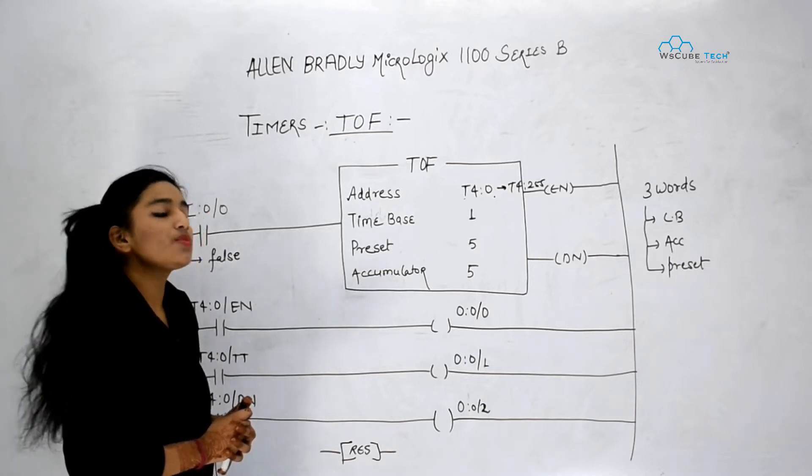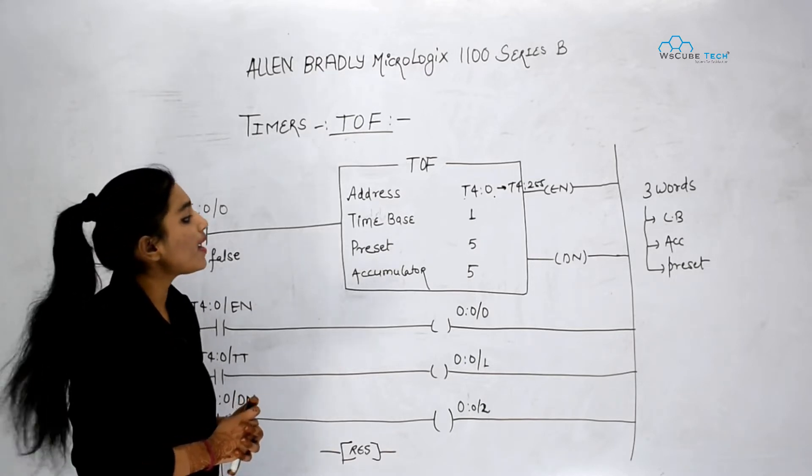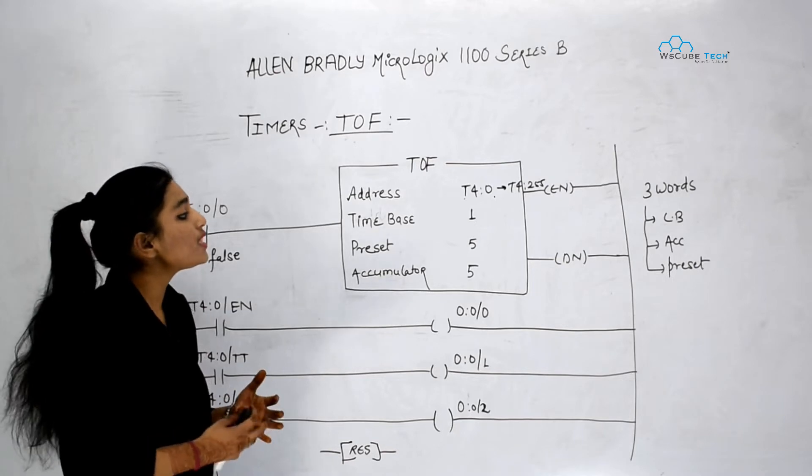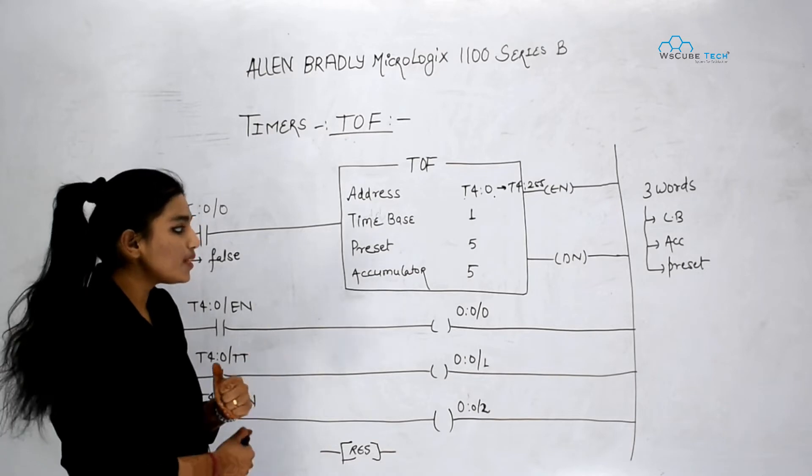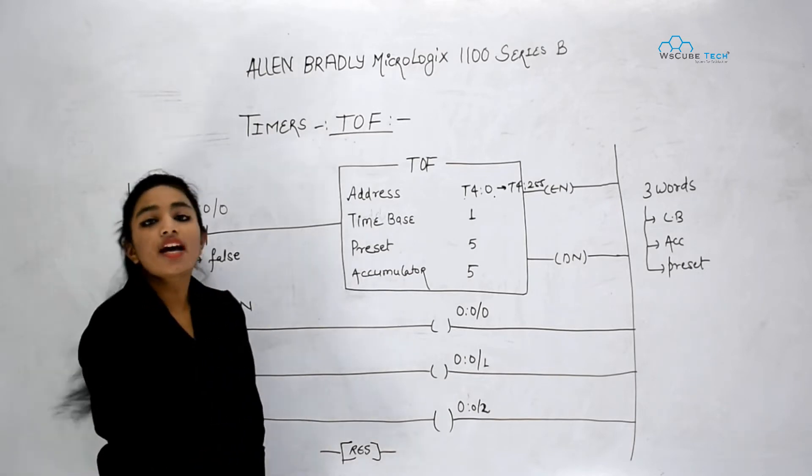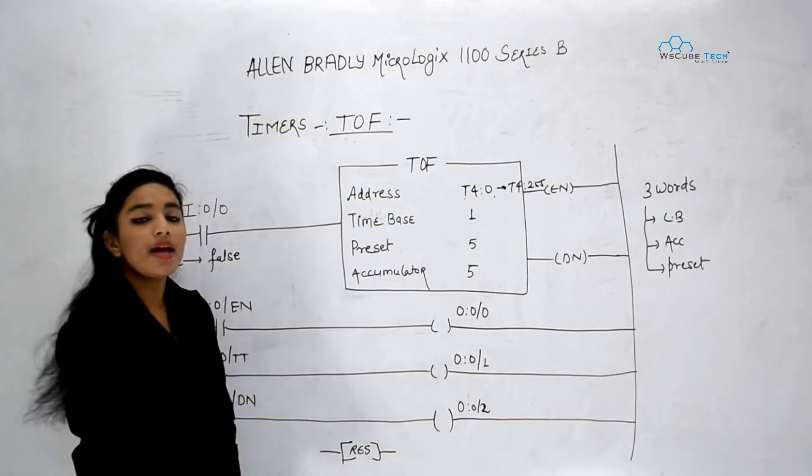Next we have got preset. Preset is the amount of time or the delay by which we want that our output should get off. Next we have got accumulator. Accumulator is the real time value of our timer which will be shown by PLC.